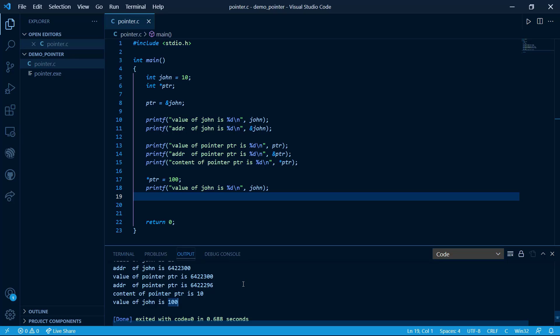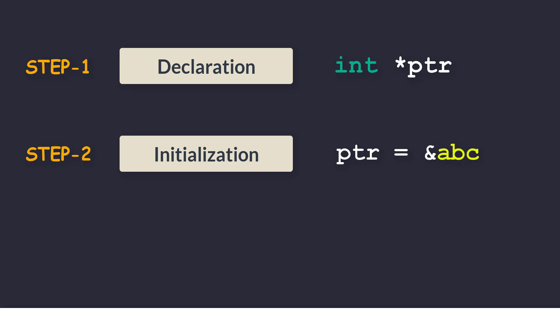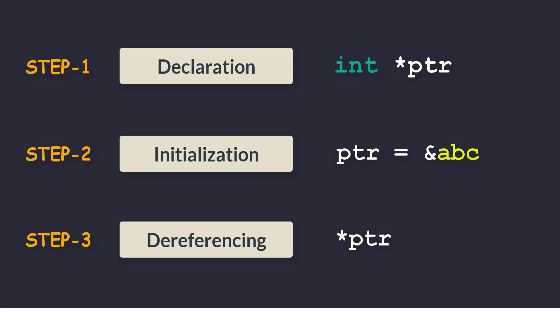So this is all in this video. Let's quickly conclude what we have learned. In the first step, we saw the declaration of a pointer and how it differs from the declaration of a normal variable. In the second step, we learned the initialization of a pointer — how to store the address of another variable into a pointer using the & operator. In the third and final step, we saw how to access the value where the pointer is pointing, using the asterisk or dereferencing operator. In the coming video, we will look more about pointers.